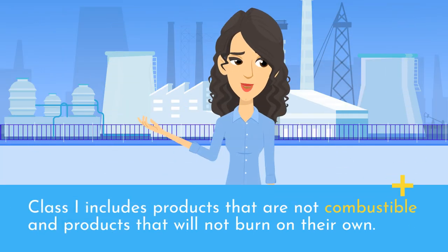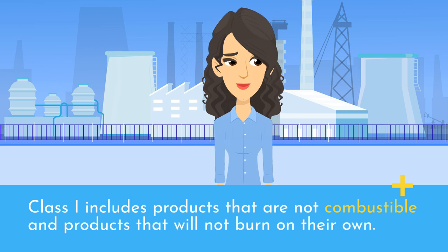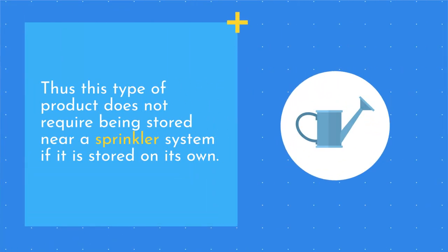Class I includes products that are not combustible and products that will not burn on their own. This type of product does not require being stored near a sprinkler system if it is stored on its own.